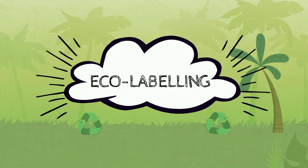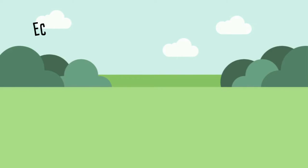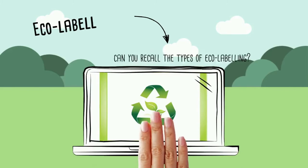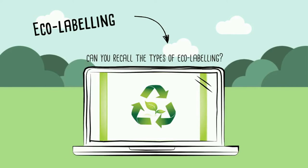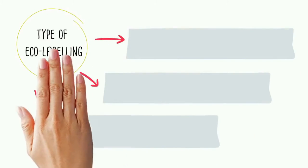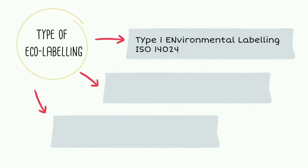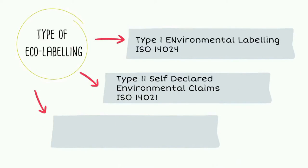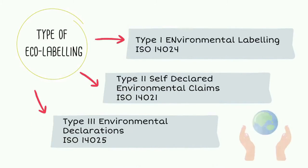Eco-labeling. Eco-labeling consists of 3 types: Type 1, Type 2, and Type 3.